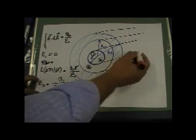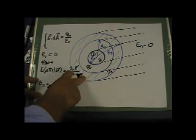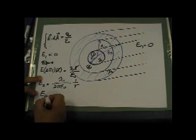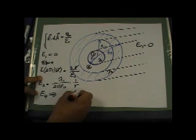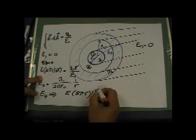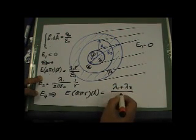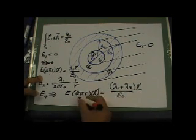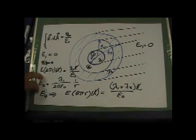When I go to region three, E₃ equals zero, because I am inside the outer conductor, and the net charge inside a conductor is equal to zero. For E₄ outside everything, I apply Gauss's law: E times 2πrL equals (lambda one plus lambda two) times L divided by epsilon naught. The L's cancel, and the electric field in region four equals (lambda one plus lambda two) divided by two pi epsilon naught, times one over r.